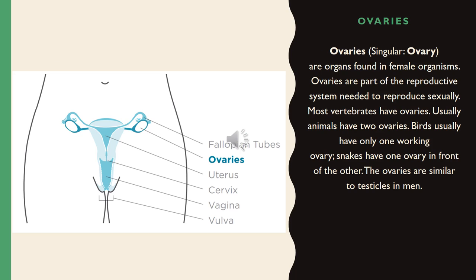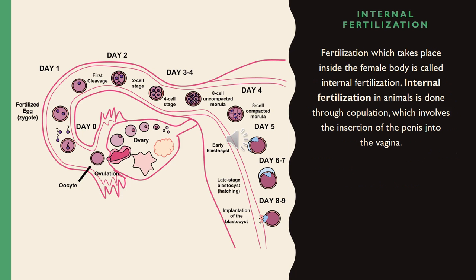Ovaries are organs found in female organisms and are part of the reproductive system needed to reproduce sexually. Most vertebrates have ovaries; usually animals have two ovaries. Birds usually have only one working ovary, and snakes have one ovary in front of the other. The ovaries are similar to testicles in men.